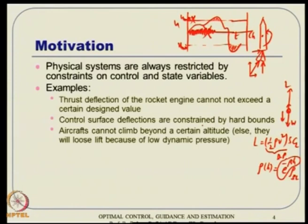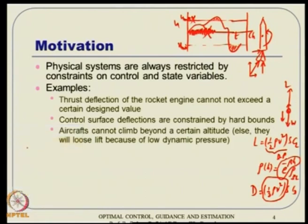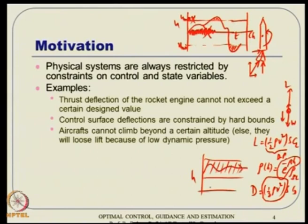If the aircraft flies too low, there is a large drag penalty. So there is an optimum altitude within which the aircraft should fly. We need to impose a constraint on height, which is a state variable in flight dynamics. Therefore, state constraints are also necessary.